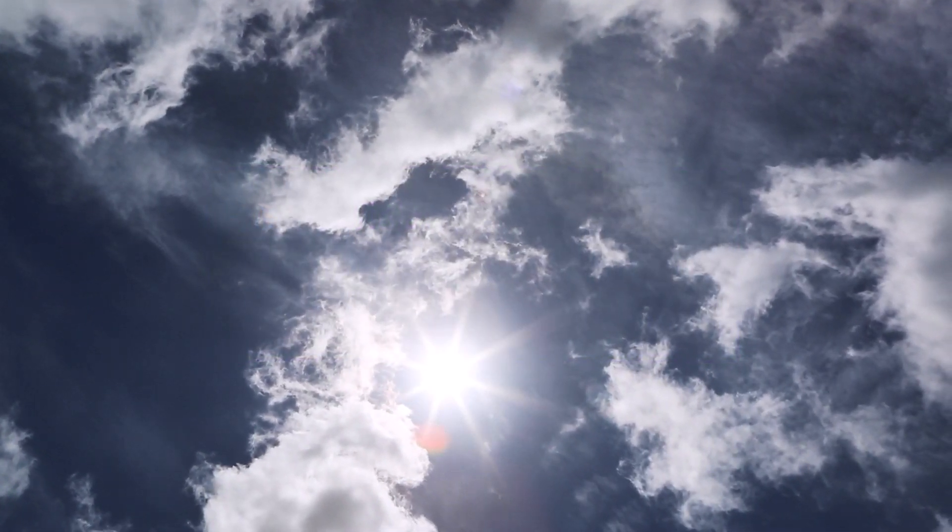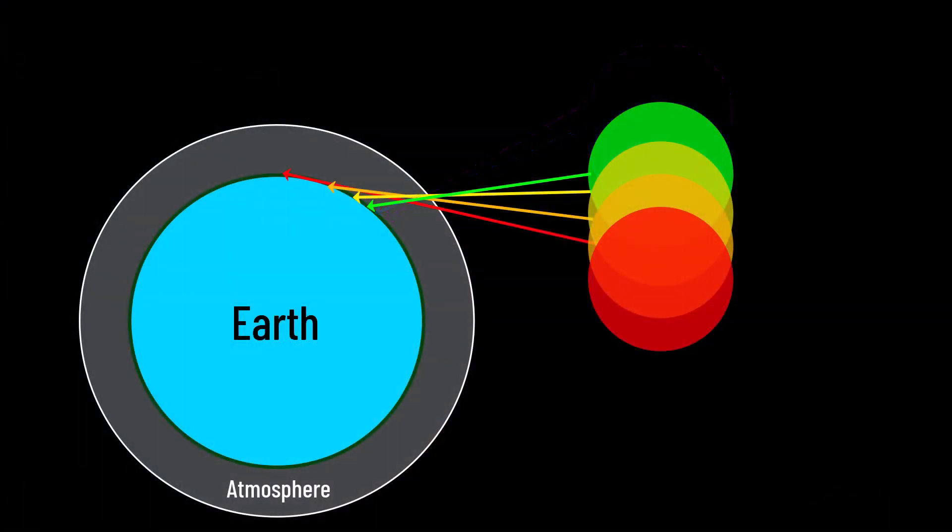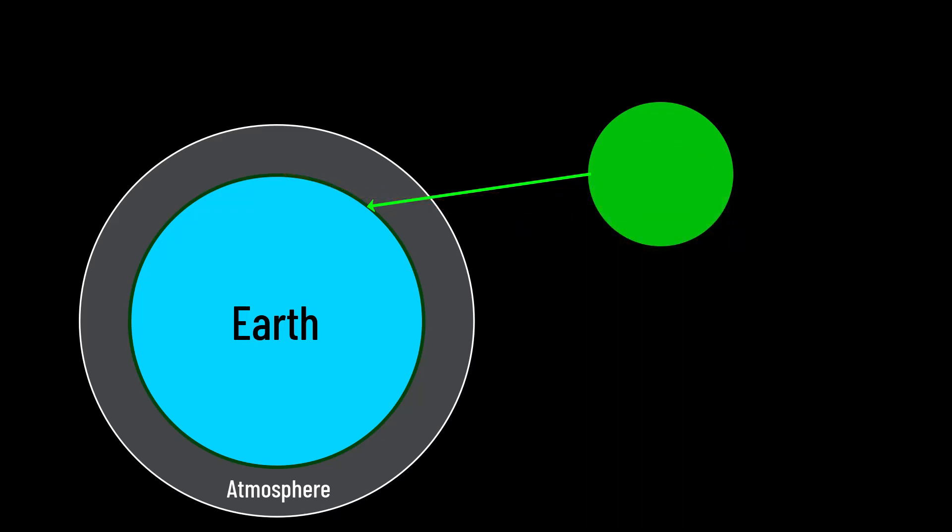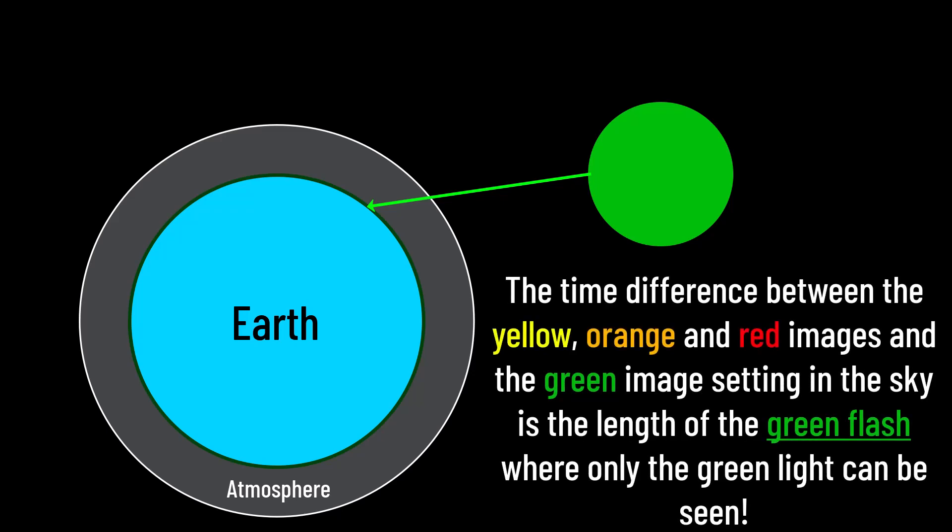But at sunset, when every colour has been refracted towards us already, this added dispersion of blue light essentially causes it to be filtered out, so the blue image on top is almost never actually there. Then the next colour in the sequence is green, so once the red, orange and yellow sun images have set, there's around two seconds before the green image also sets, and this is then perceived as a green flash. So what you're observing as the green flash is essentially the green image by itself.